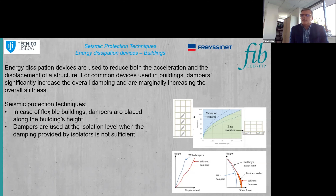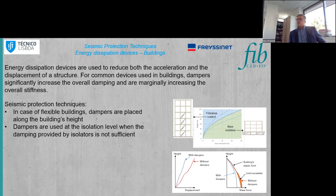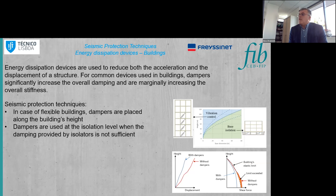In flexible buildings, dampers are placed along the building height. For base isolation, dampers are used at the isolation level when the damping provided by isolators alone is not sufficient. This is illustrated in the graph on the right. Dampers can also help control vibration due to mass effects, and their use reduces displacement compared to solutions without dampers, helping the building behave below the elastic limit in terms of shear force transmission.